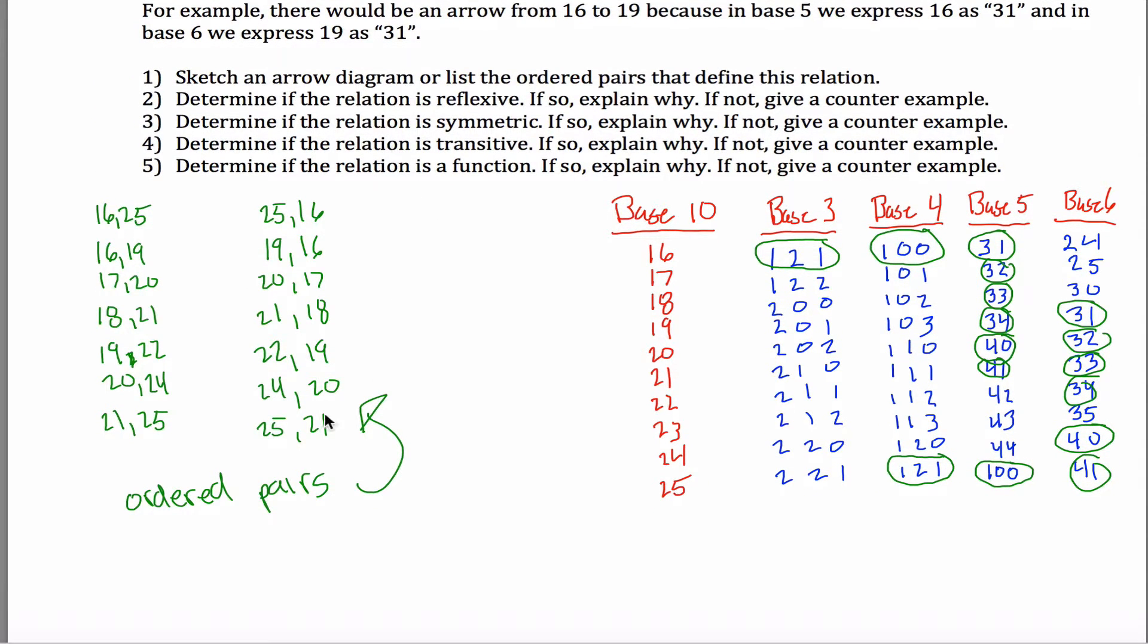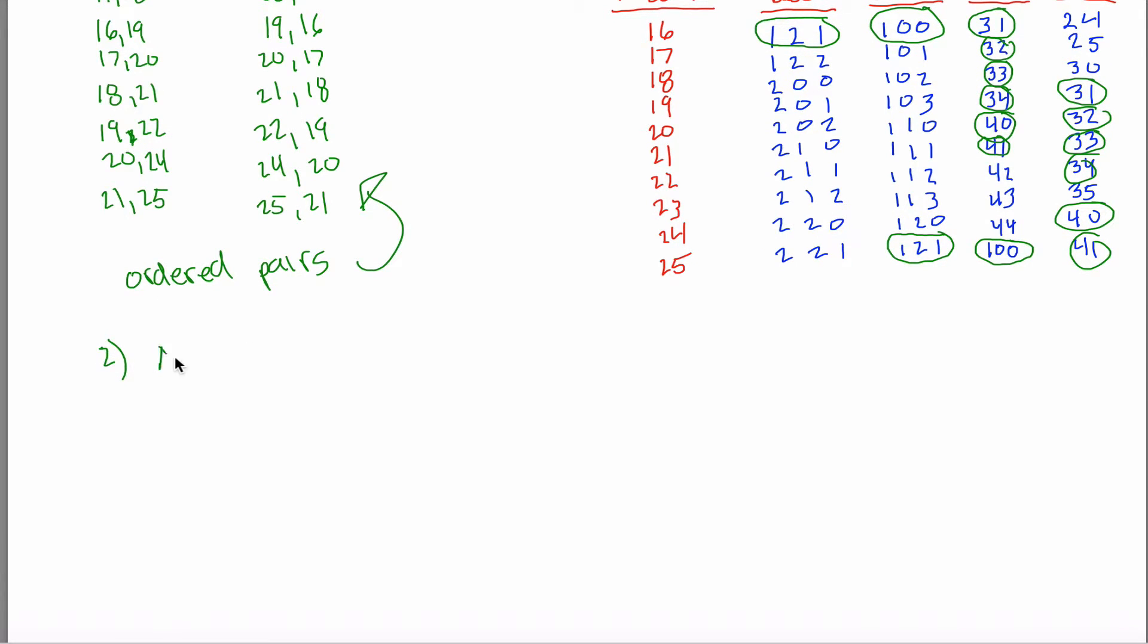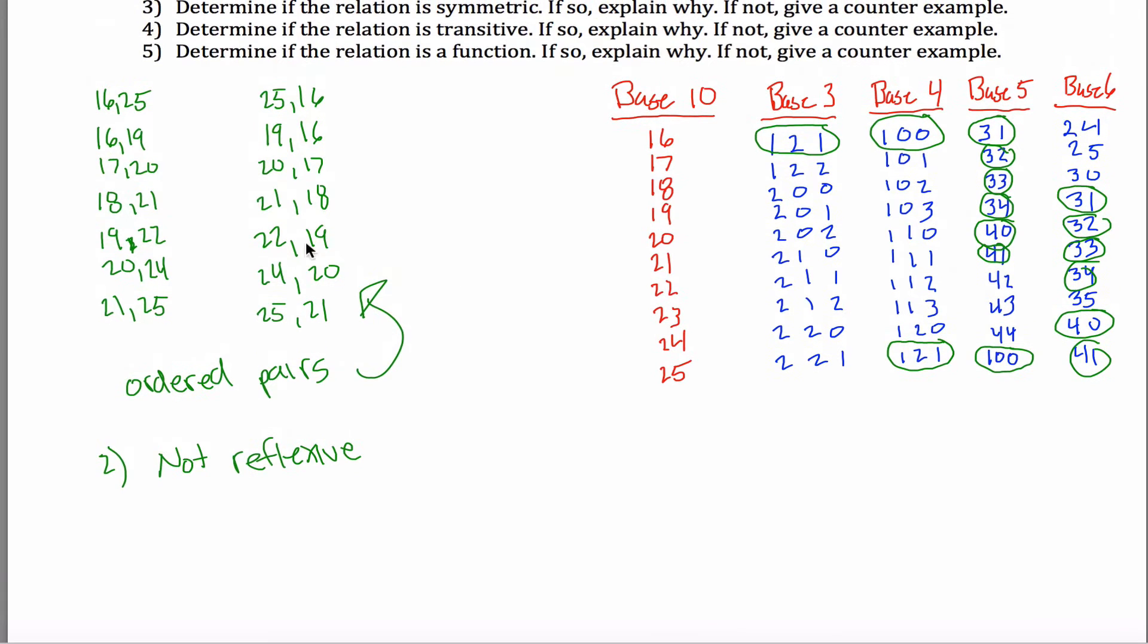Two says determine if the relation is reflexive. It's not reflexive. To be reflexive, you need an arrow from every single element to itself. You need 16, 16, 17, 17, 18, 18, and so on. And not only is it not the case that all of those exist, none of them exist in this case. Not reflexive. 16, 16 is missing, for example. Lots of others. You might have said 17, 17 is missing. That's true too.